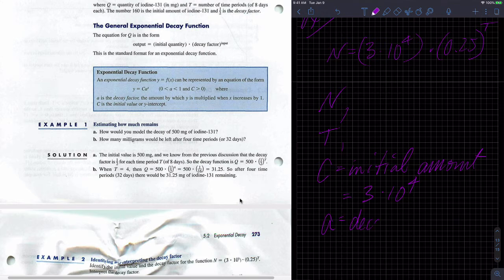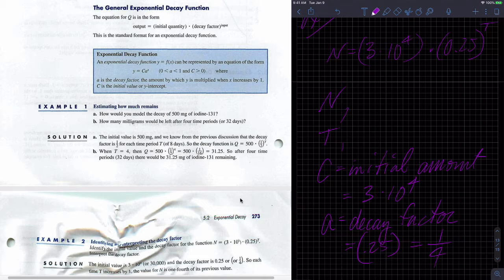And our decay factor, A, which is our decay factor, is equal to 0.25. Or you could write it as a quarter if you wish. And they give us those same answers below.